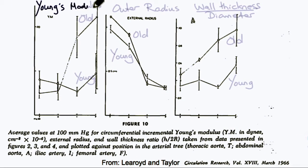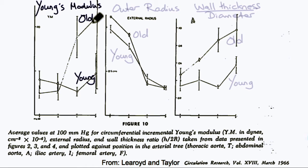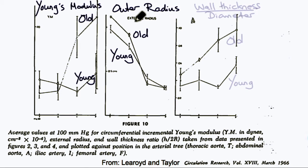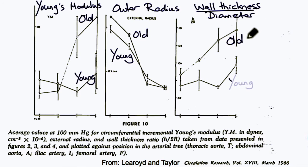Here we see a plot of the Young's modulus at different levels of the aorta, going from the top down towards the femoral artery, in older subjects and younger subjects. You can see particularly in the older subjects the stiffness of the vessel increases towards the smaller arteries. Here's the outer radius — you can see that the radius decreases as you'd expect, and is a little lower in the younger subjects. Here's the wall thickness to diameter ratio, which not only increases as you get towards the arterioles but is larger in older subjects.